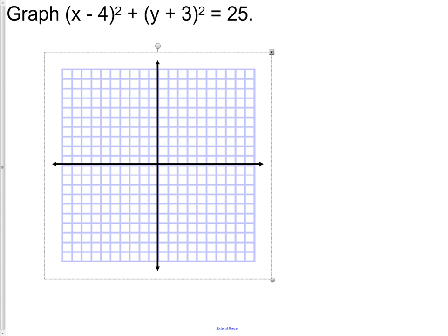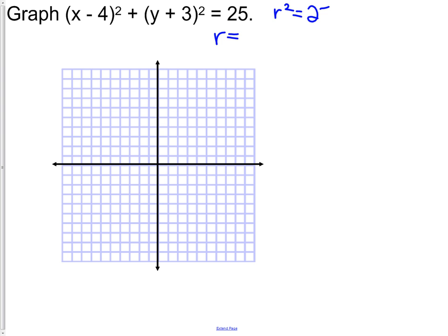Graph x minus 4 squared plus y plus 3 squared equals 25. The easiest thing is to start with the radius. The radius squared is 25. Therefore, the radius is just 5. Now, if you remember what I talked about a little bit ago, to find our coordinates, I actually would do x minus 4 equals 0, so I would get 4 for one point. y plus 3 equals 0 and negative 3 for my other point.